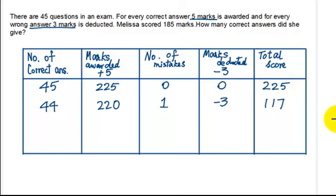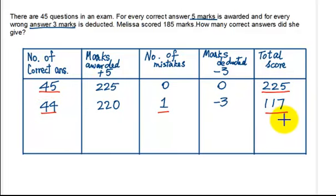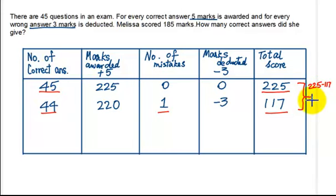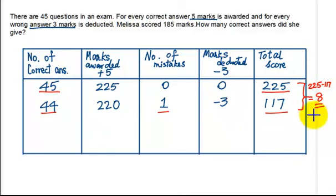This table shows us the result of making one mistake. If all questions were correct, she scored 225. If she just made one mistake, she scored 217. So what is the difference between the two? 225 minus 217 comes to 8. This means that for every mistake that Melissa makes, she loses 8 marks.